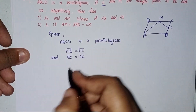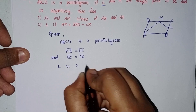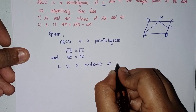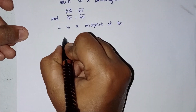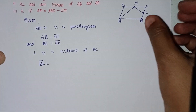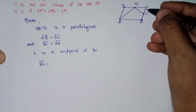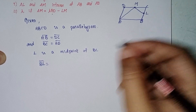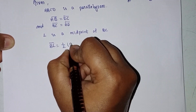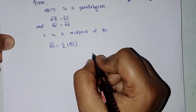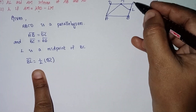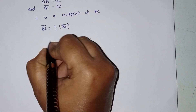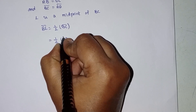Now let's discuss L first. L is the midpoint of BC. So the distance BL — since L is the midpoint, BL is half of BC. Since BC equals AD, we can write BL as half into AD.